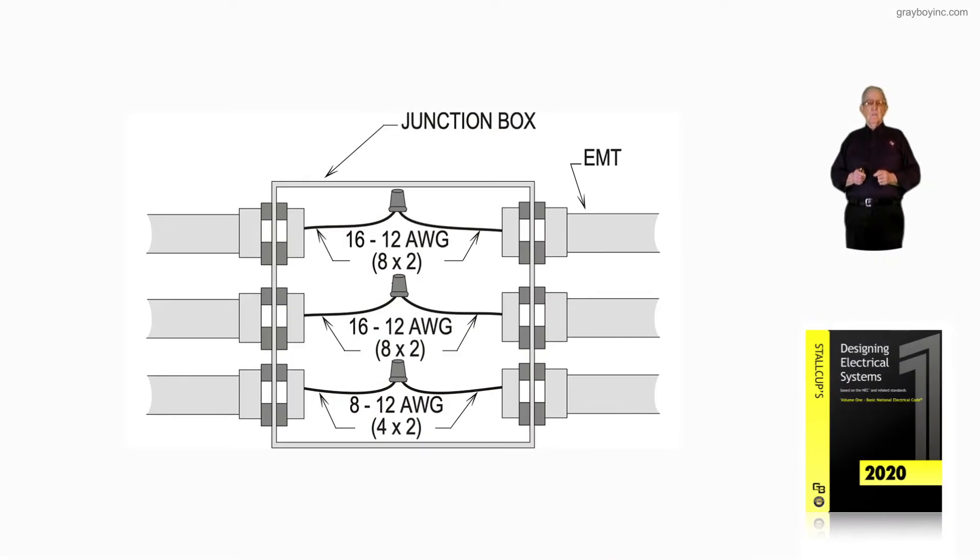This illustration deals with junction boxes. We have so many conductors entering this box that we can't use a device box, an octagon box, or a square box with extension rings.